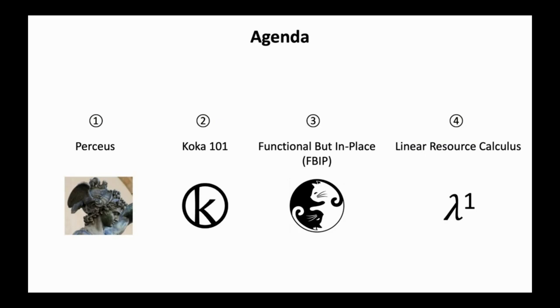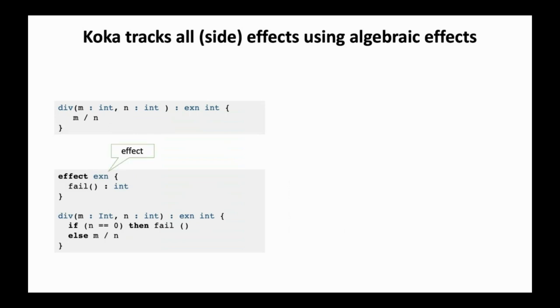So, now we move to the second part of this talk, where we give a brief introduction to COCA and show how strong static guarantees at compile time allow Perceus to be integrated with other language features. COCA is a strongly typed functional style language with algebraic effects. Algebraic effects are a unifying language abstraction that is able to express composable and modular computational effects. Consider defining the division function. If we define the div function this way, when m is zero, we will get a divided by zero error at runtime.